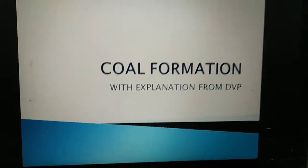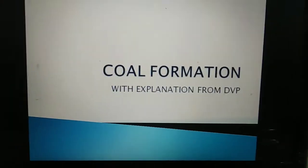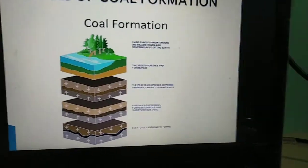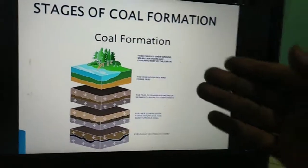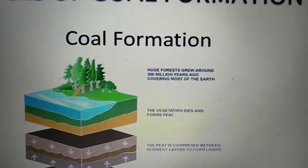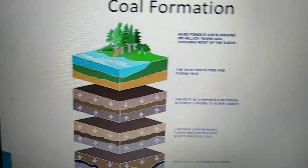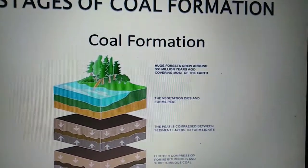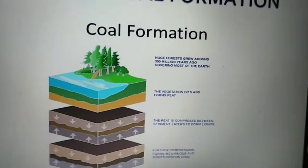So this is the PPT on coal formation with explanation from DVP. First, stages of coal formation — I'm going to explain it with a diagram, writings, text, and many things. Huge forests grew around 300 million years ago, covering most of the earth with trees, water, and natural beauty.